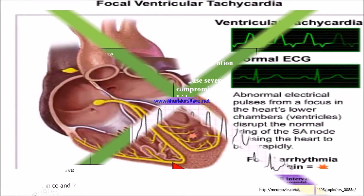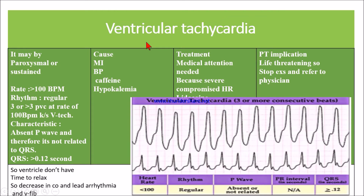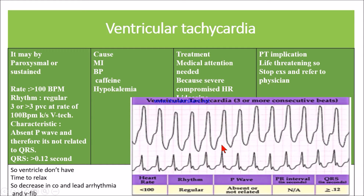Ventricular tachycardia may be paroxysmal or sustained. The rate will be greater than 100 beats per minute — we can see 300, 150, and 100 on the ECG scale. Rhythm is regular. If there are 3 or more premature ventricular contractions at a rate of 100 beats per minute, it is known as ventricular tachycardia. There is an absence of P wave on ECG, the rhythm is regular but P wave is absent and not related to the QRS complex, and the QRS duration is greater than 0.12 seconds.